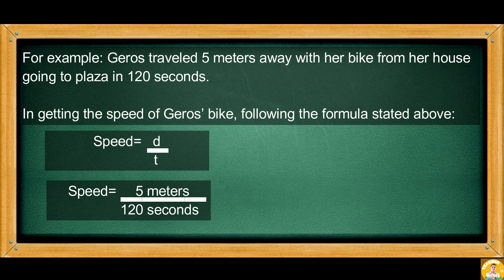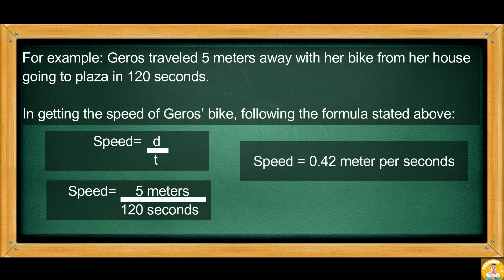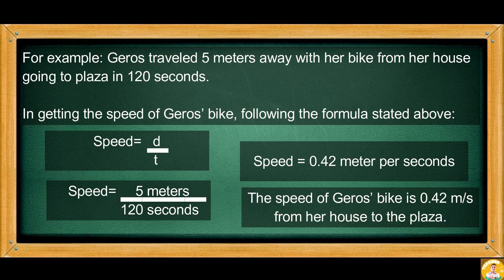If we divide 5 with 120, the quotient will be 0.42 meters per second. The speed of Jaros' bike is 0.42 meters per second from her house to the plaza.